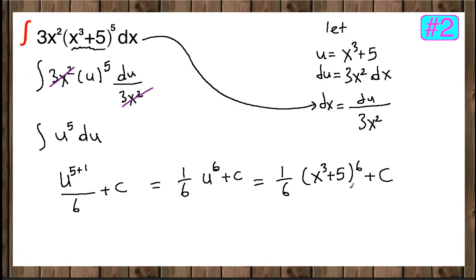And again, if you want to write more compact, you can do x cubed plus 5 to the 6th power divided by 6 plus c. You can leave either in this form or that form.